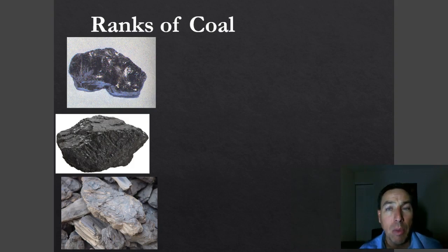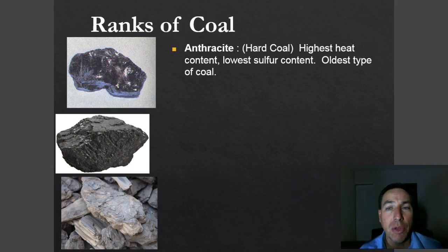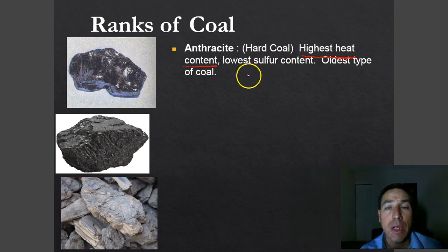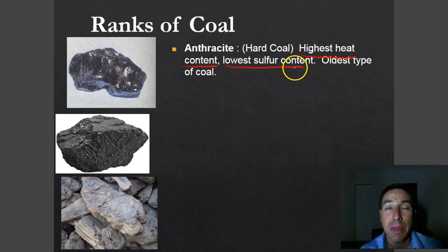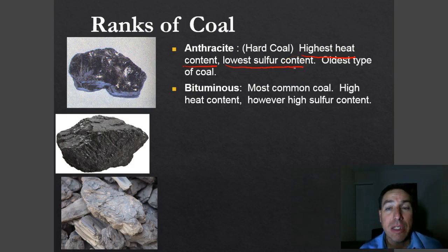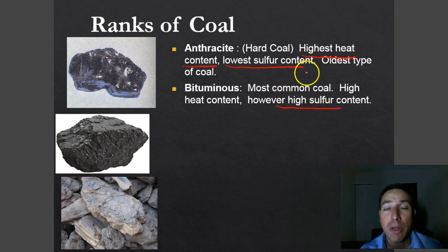There are different ranks of coal. The first type is anthracite, also known as hard coal. It has the highest heat content, making it really good with a very high net energy. It also has a very low sulfur content, which means less pollution from burning sulfur. It is the oldest type and the best type of coal. The only drawback is there's not much of it — unfortunately the United States doesn't have a lot of anthracite deposits. The next type is bituminous, the most common coal in the United States. It's a very good coal with a very high heat content.